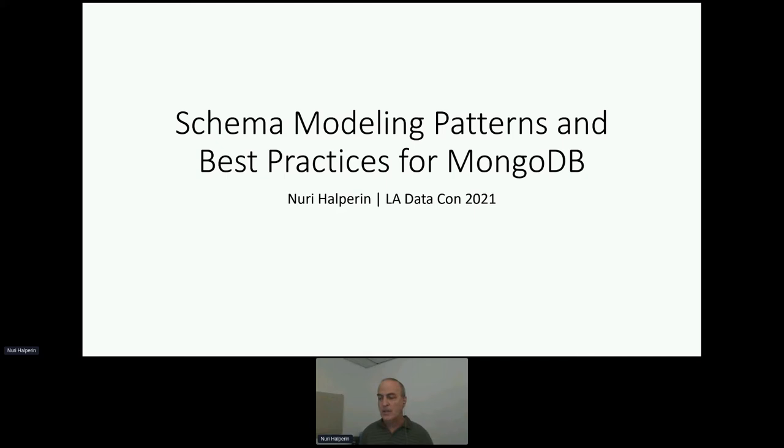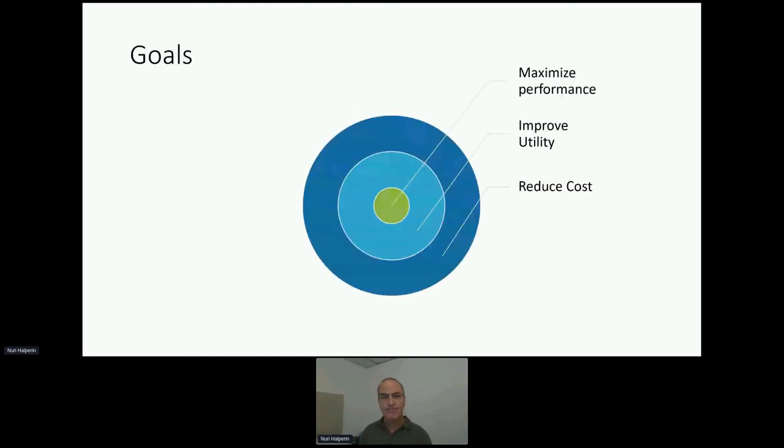Why are we talking about schema modeling for a document database? So at the core of it, we want to maximize the performance of our workloads. The workloads could be write-heavy, read-heavy, some mixture of the above. At the end of the day, the database is there to serve you the data, and we want to maximize that performance. We want to improve the utility of the data stored in the database.